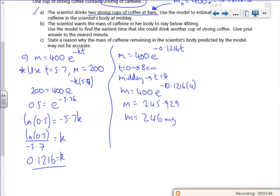Part B wants to know when the mass... So it says scientist wants the mass of caffeine in her body to stay below 480 mg. Use the model to find the earliest time that she can drink another cup of strong coffee. So when we're doing this for part B.